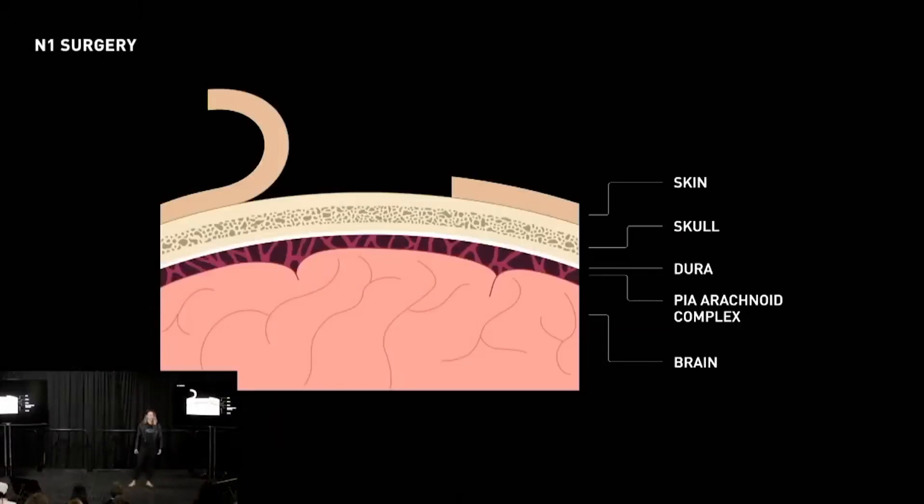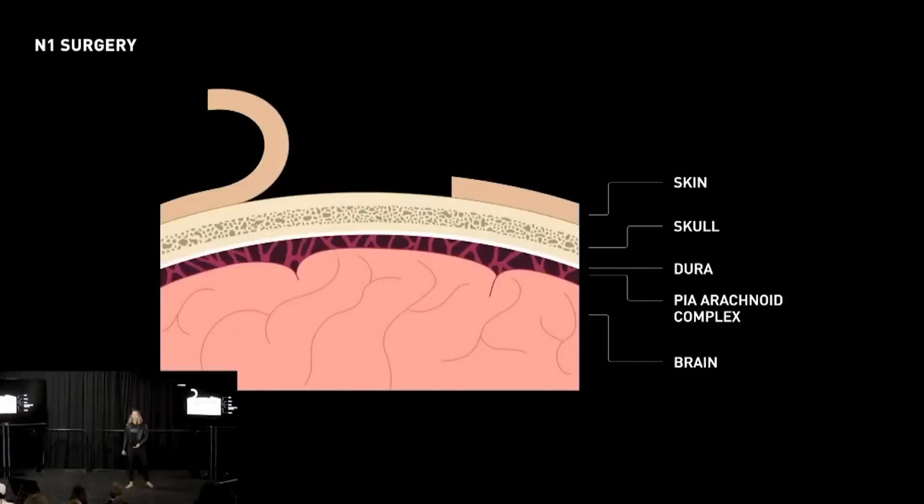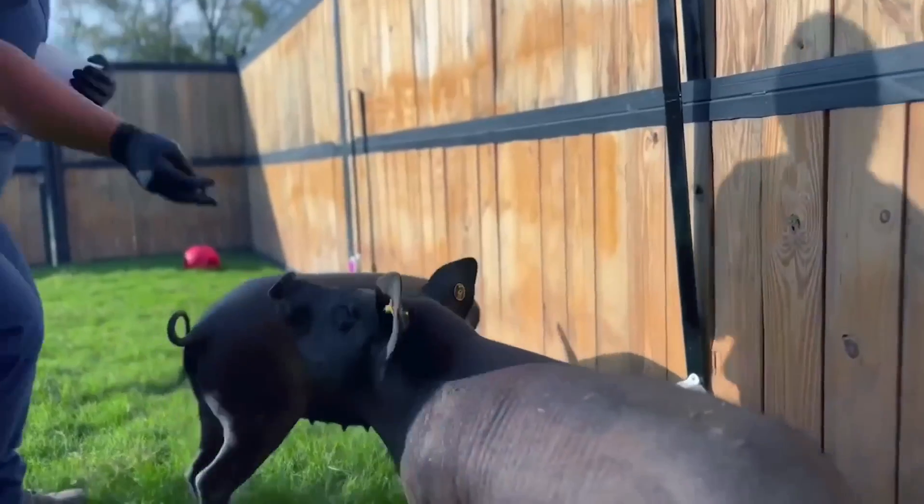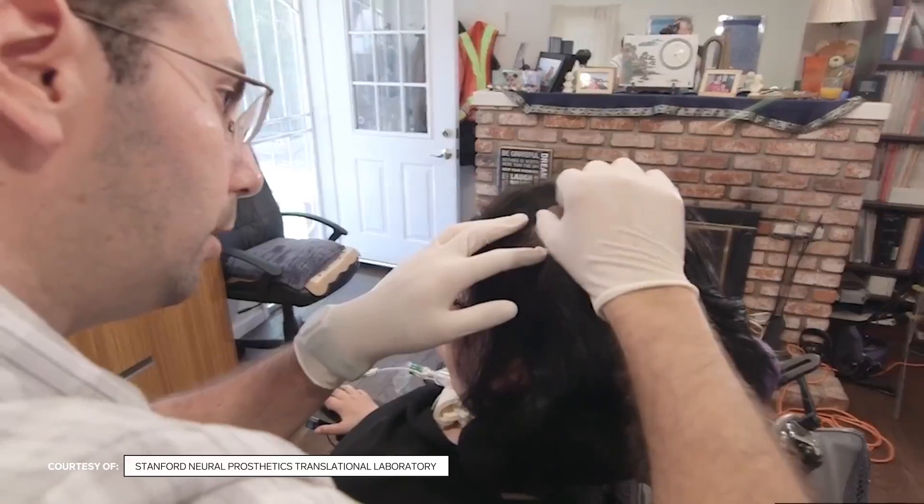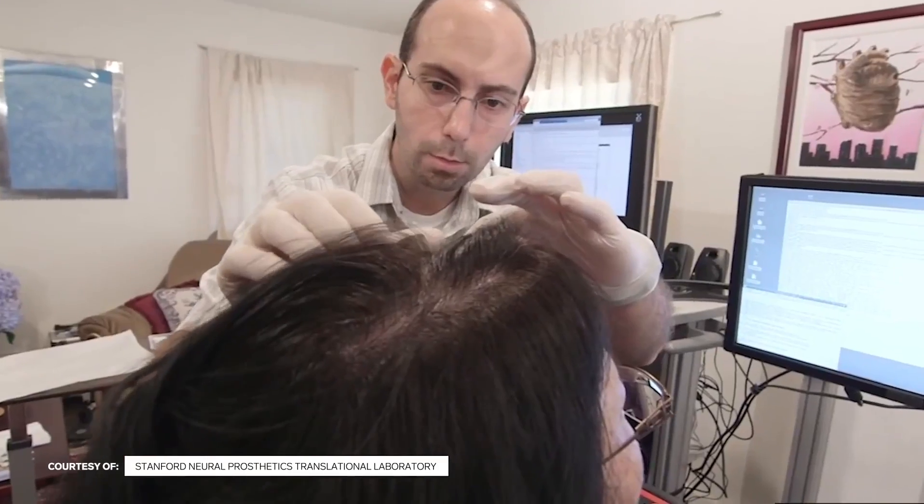Neuralink employees told Reuters last year that the company was rushing and botching surgeries on monkeys, pigs and sheep, resulting in more animal deaths than necessary, as Musk pressured staff to receive FDA approval. The animal experiments produced data intended to support the company's application for human trials, the sources said.